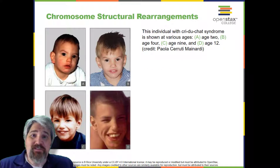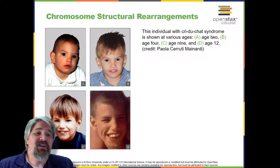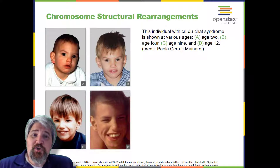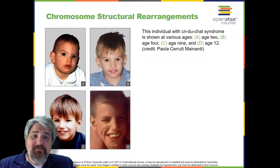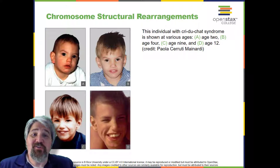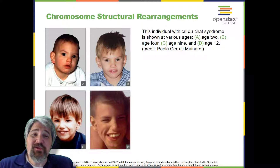Chromosome structural rearrangements: cytologists have characterized numerous structural rearrangements in chromosomes, including partial duplications, deletions, inversions, and translocations. Duplications and deletions often produce offspring that survive but exhibit physical and mental abnormalities. Cri du chat — from the French for 'cry of the cat' — is a syndrome associated with nervous system abnormalities and identifiable physical features that result from a deletion of most of the small arm of chromosome 5.